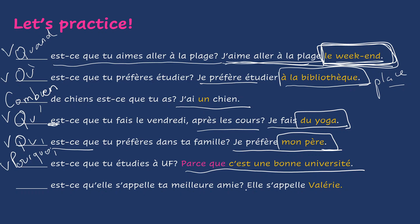And then the last one — you already know this type of sentence. Elle s'appelle Valérie, and you want to say comment. Comment est-ce qu'elle s'appelle ta meilleure amie? Elle s'appelle Valérie. Voilà, merci beaucoup. I hope it helped. Merci, au revoir, and I'll see you in the next video. À bientôt.